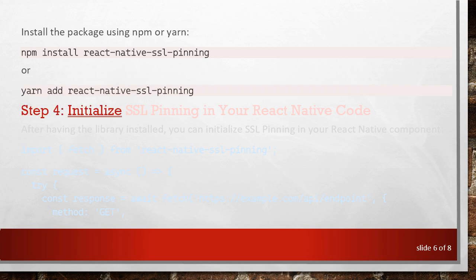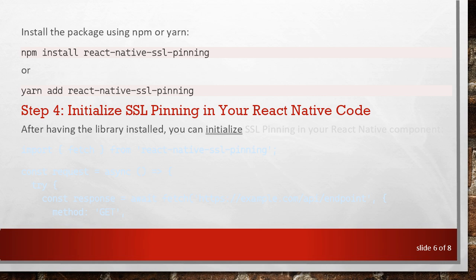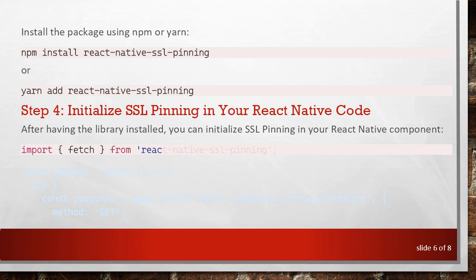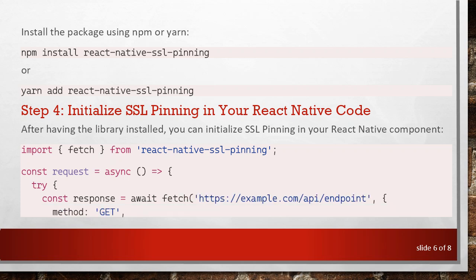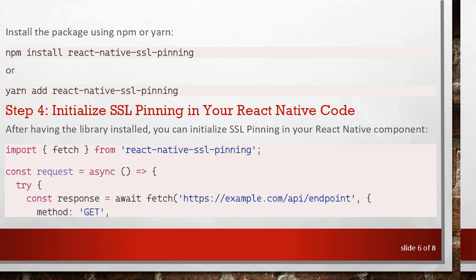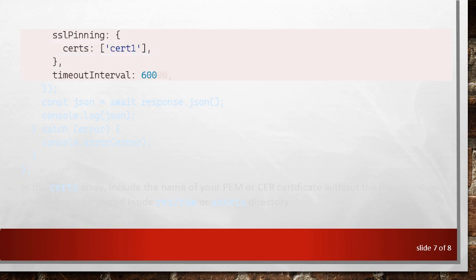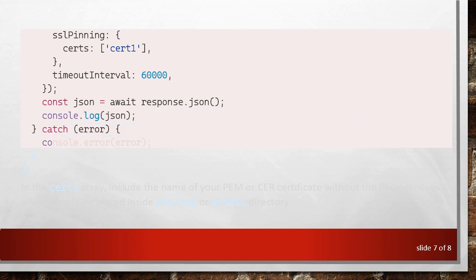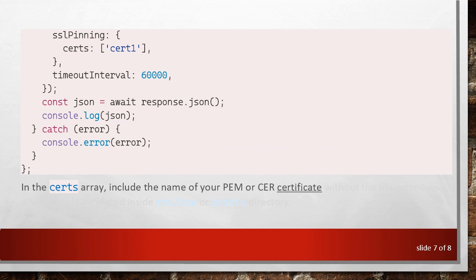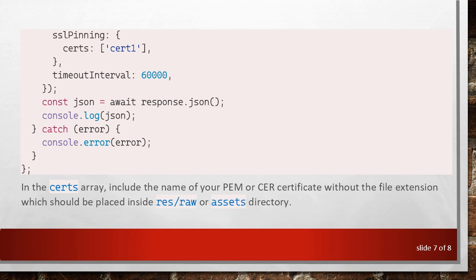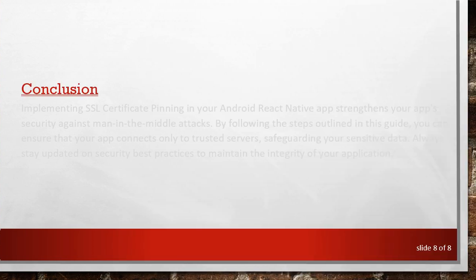Step 4: Initialize SSL Pinning in your React Native Code. After having the library installed, you can initialize SSL Pinning in your React Native component. In the CERTs array, include the name of your PEM or CERT certificate without the file extension, which should be placed inside the res/raw or assets directory.